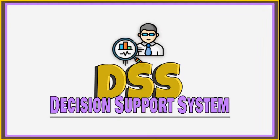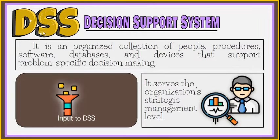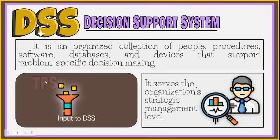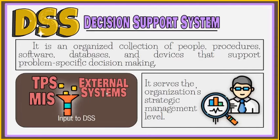The last type of information system we will discuss is the Decision Support System, or DSS. It is an organized collection of people, procedures, software, databases, and devices that support problem-specific decision-making. DSS uses input from internal systems — the TPS and MIS — as well as external systems. They are commonly used by senior management to make non-routine decisions and to provide solutions to problems that are unique and change frequently.